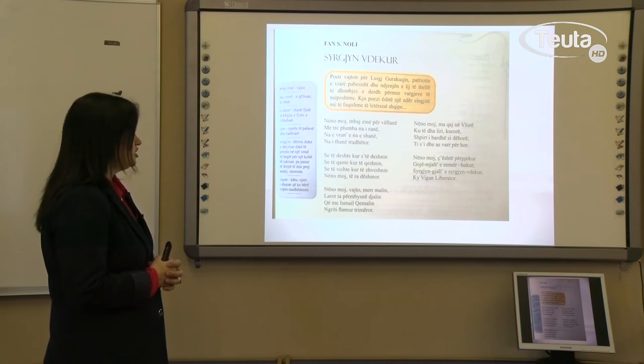Nënë moj ma qaj në Vlorë, ku të dha lirikë e thellë, shpirti bardhë si dhe borë, ti si dhe e zvarë përhorë. Nënë moj qësh për pjekur, goj mjalti e zemër hekur, sürgün gjallë e sürgün i vdekur, këtu i kanë liberator.